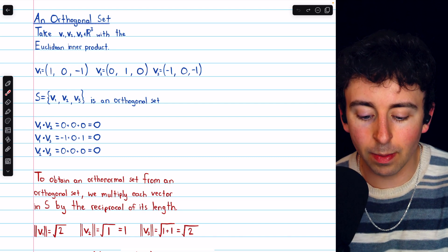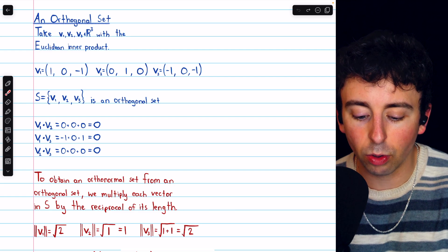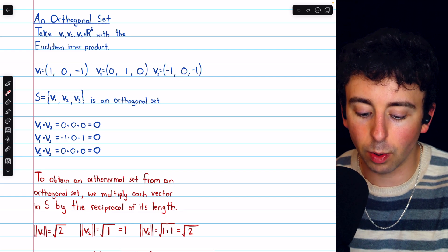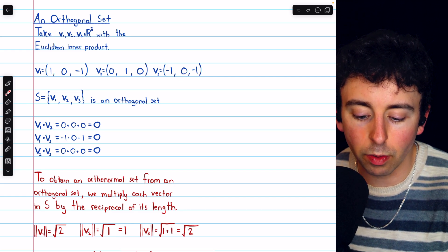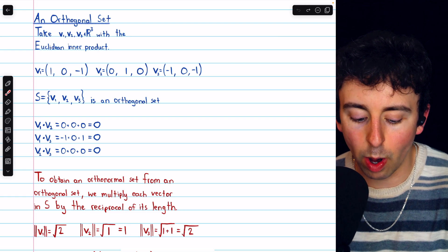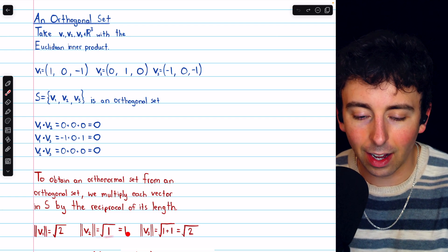The length of V3 is the square root of negative 1 squared plus 0 squared plus negative 1 squared. So that's the square root of 1 plus 1, which is the square root of 2.